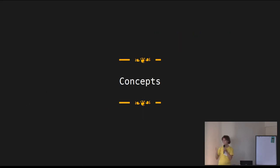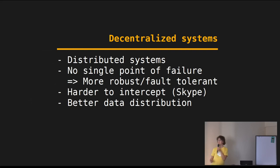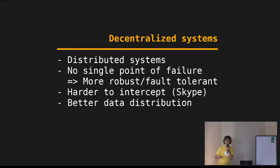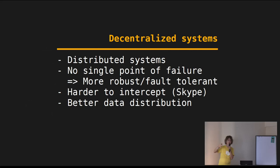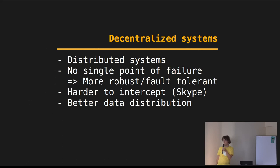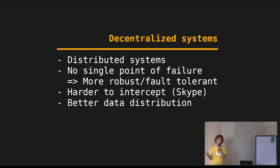Let's start with the concepts. IPFS and similar systems are decentralized systems. Often people also say distributed systems, and I use them interchangeably, but I like the term decentralized more because it gives the hint that things work differently. One could argue that if you store data in AWS or Google Cloud, they also use a distributed system in the backend — but it's not decentralized. Having a decentralized system means there's no single point of failure. It will always kind of work, and it's more robust and fault tolerant.